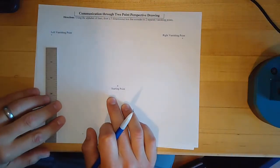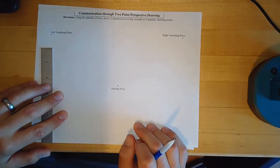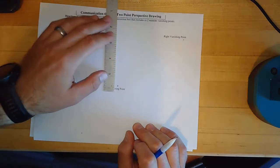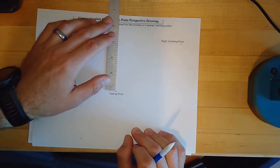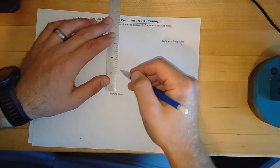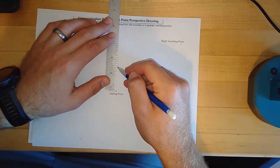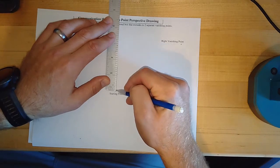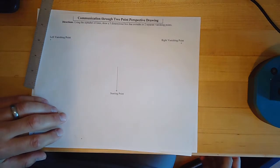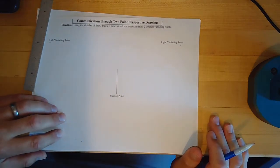I'm given a starting point and I want to use this to make a two-point perspective rectangular box. The easiest thing to do is to come up here and draw a vertical line first. Try to make sure that ruler is perpendicular to the page. I'm going to draw a line about an inch and a half. You can follow along at home and try this if you want — there's my first drawing.